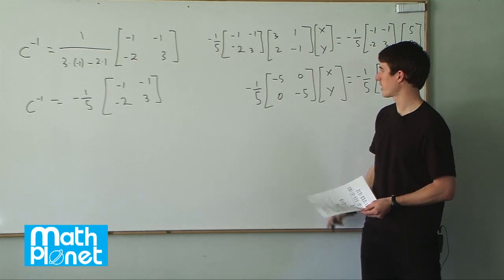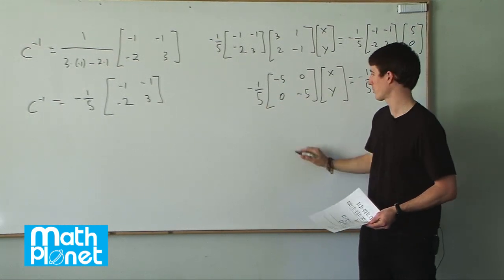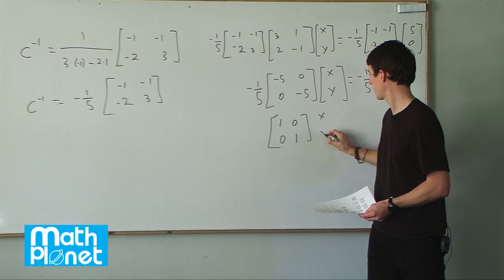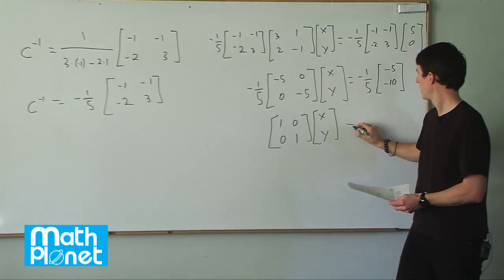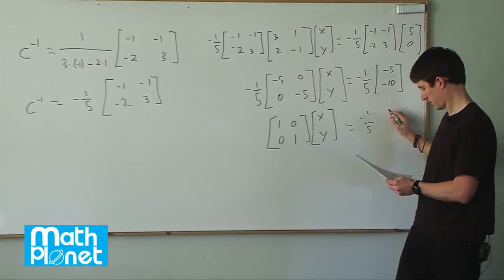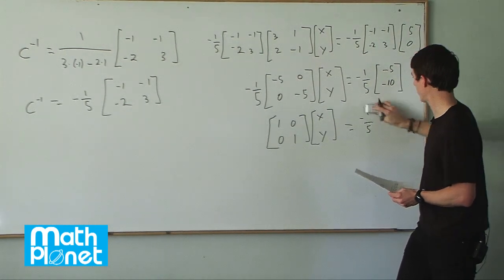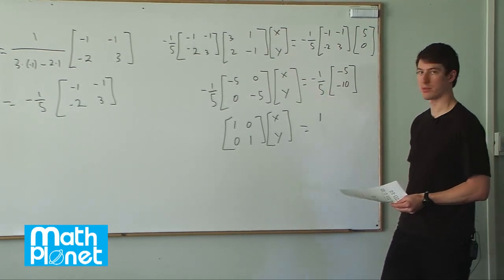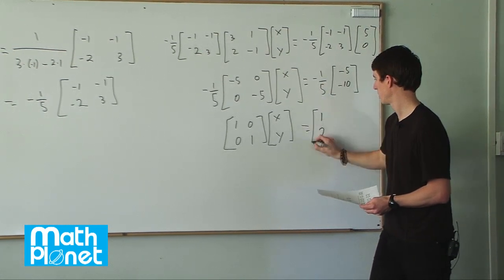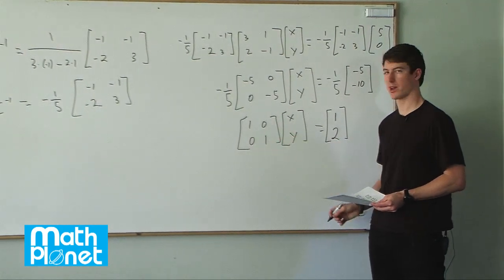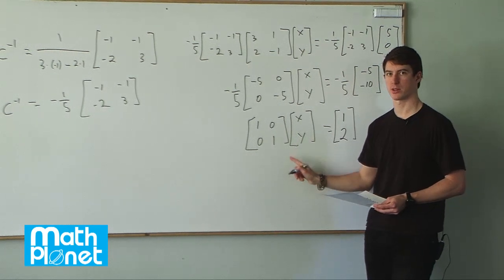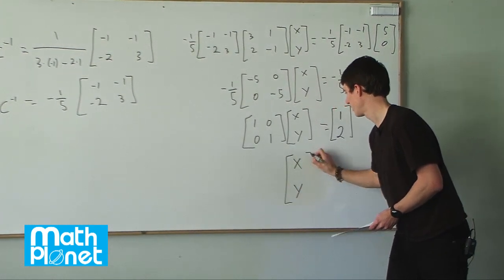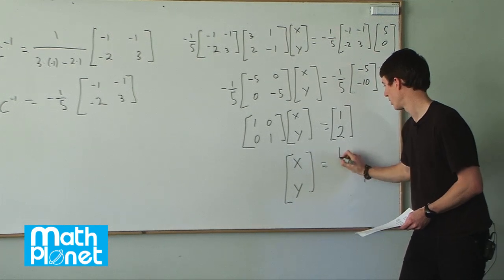This multiplies out to give us the identity matrix — negative 5 divided by negative 5 is of course 1. So we have the identity times x and y equals negative one-fifth times this. We can simplify right away: negative one-fifth times 5 is 1, and negative one-fifth times negative 10 is 2. If we have a 2x2 identity matrix times a vector, that just gives us that vector back again. So x and y equals 1 and 2.